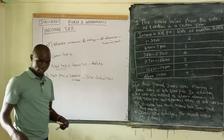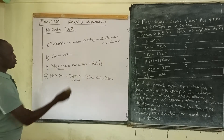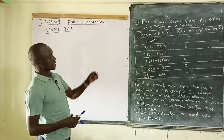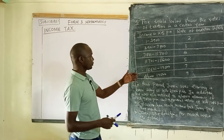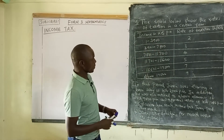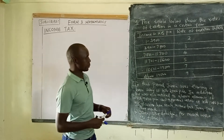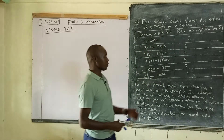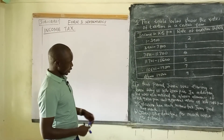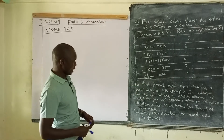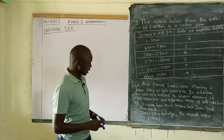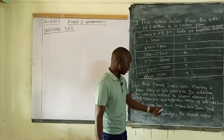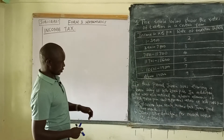To help us understand how all these things work, let us look at the question. The table below shows the rates of taxation in a certain year. We have income in Kenyan pounds per annum, and the rate of taxation in shillings per Kenyan pound. In that period, Juma was earning a basic salary of Kenya shillings 21,000 per month. In addition, he was entitled to a house allowance of 9,000 per month, and a personal relief of Kenya shillings 1,056 per month.